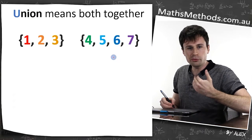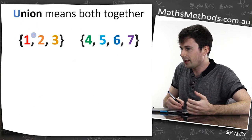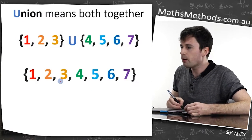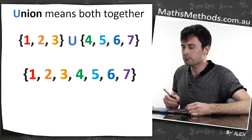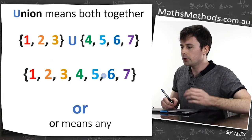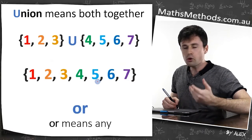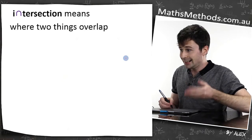Union means both together. The union of this set and this set means I combine them both — I'm bringing them both together. You've probably heard it means 'or', and 'or' means any.